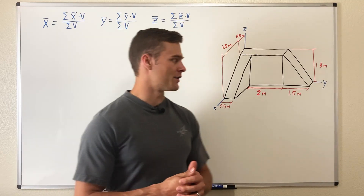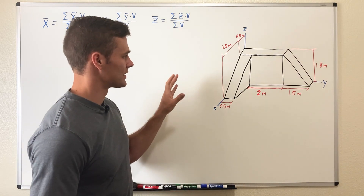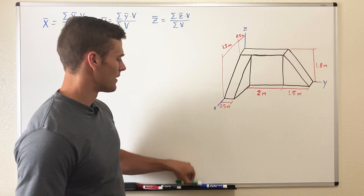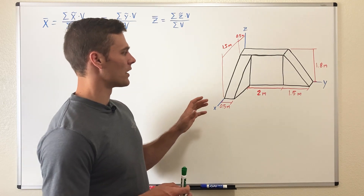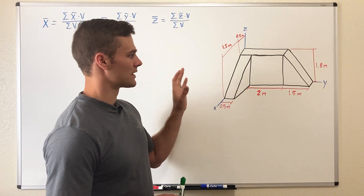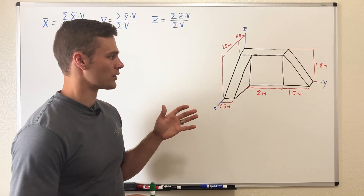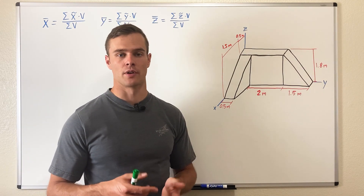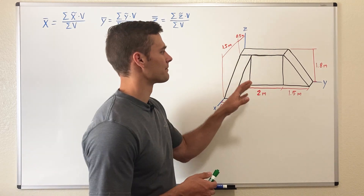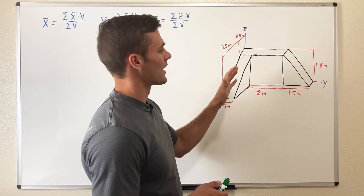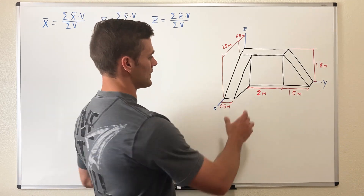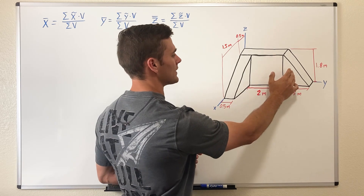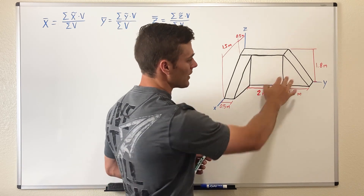The first thing we want to do is establish our coordinate system. In this problem it's already set up for us, so we don't need to worry about that part. Next, we want to split this object up into its composite parts — parts that we already know the centroid of easily. We have this right triangle prism here, this rectangular prism here, and this right triangle prism here.